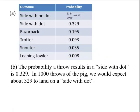Part B, the probability of a thrown result in a side with a dot is 0.329. What that means is if we were to throw this 1,000 times, we would expect about 329 to land on a side with a dot.